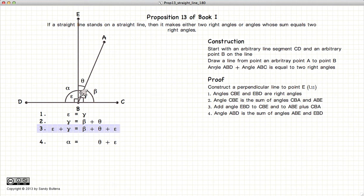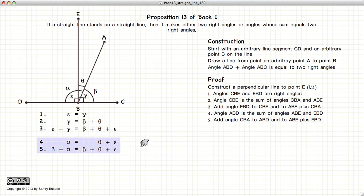Now let's look at the other side and we have that alpha is equal to theta plus epsilon. If we add beta to both sides of this equation, we again end up with a statement that is true.